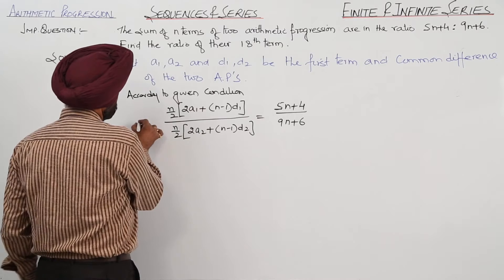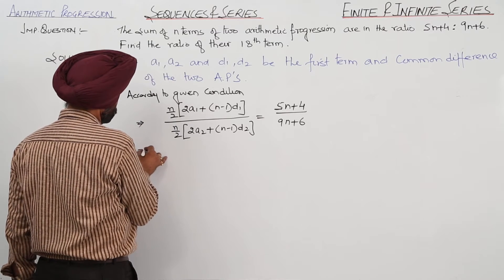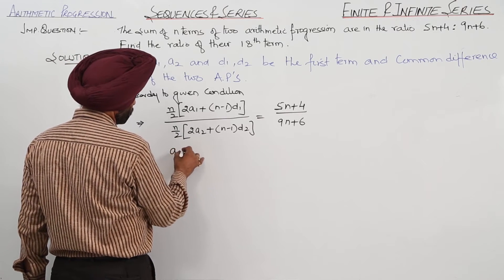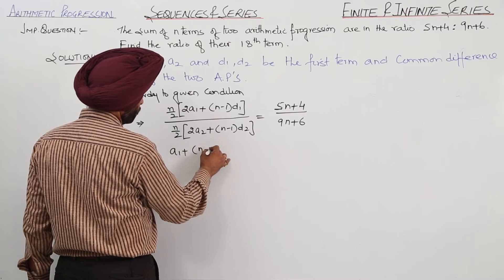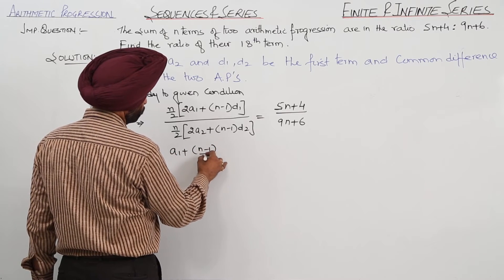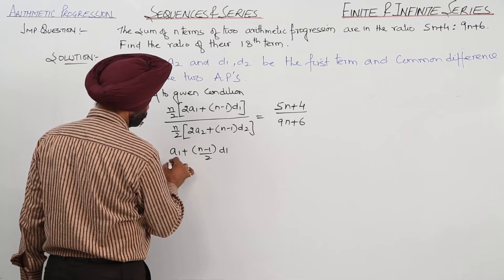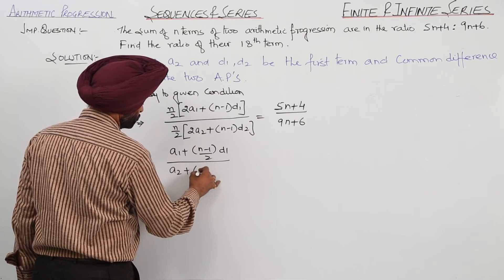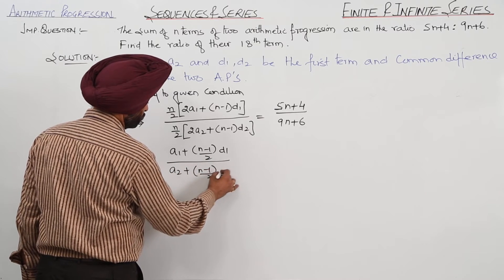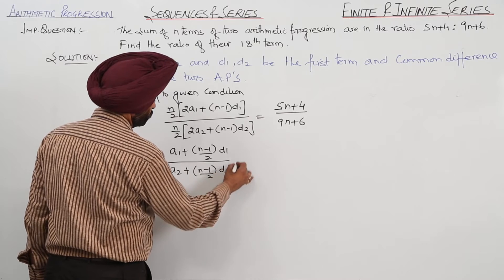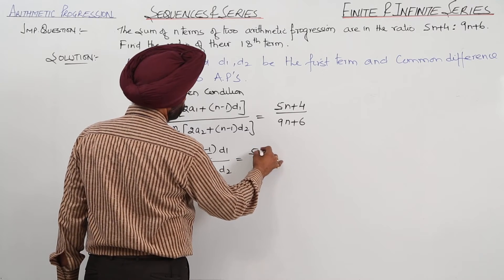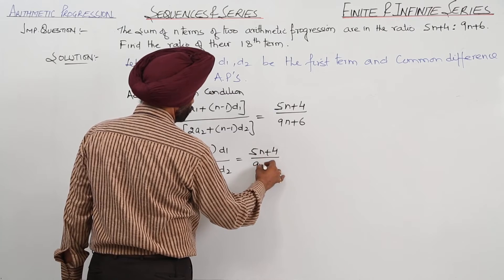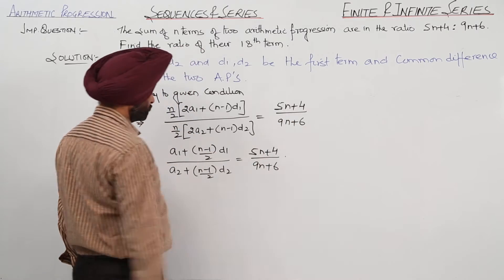Now, simplifying this, we can write: a1 plus (n minus 1 upon 2) times d1, upon a2 plus (n minus 1 upon 2) times d2, is equal to 5n plus 4 upon 9n plus 6.